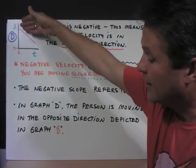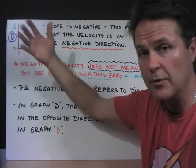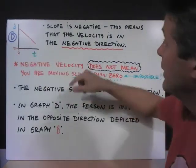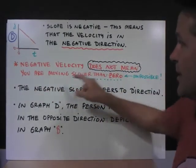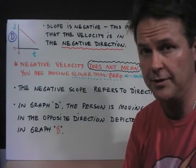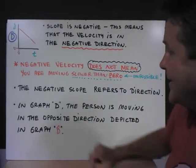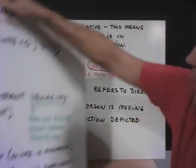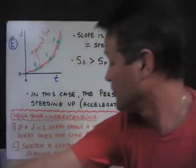Now graph D, you'll notice that the slope on this line is negative. The object seems to be moving towards our zero point, wherever we've established that reference point. Perhaps that's like the starting line, and an object is moving towards the starting line. So the slope is negative. This means that the velocity is in the negative direction. Negative velocity does not mean that you're moving slower than zero. You cannot move slower than zero, but you can move in the negative direction. So the negative slope refers to direction. In graph D, the person is moving in the opposite direction depicted in graph B.